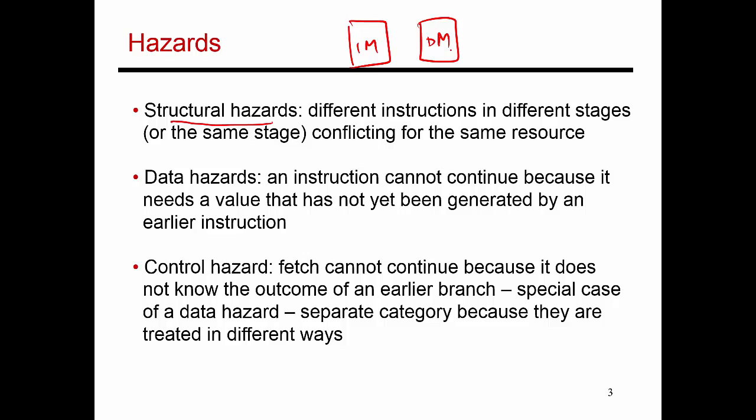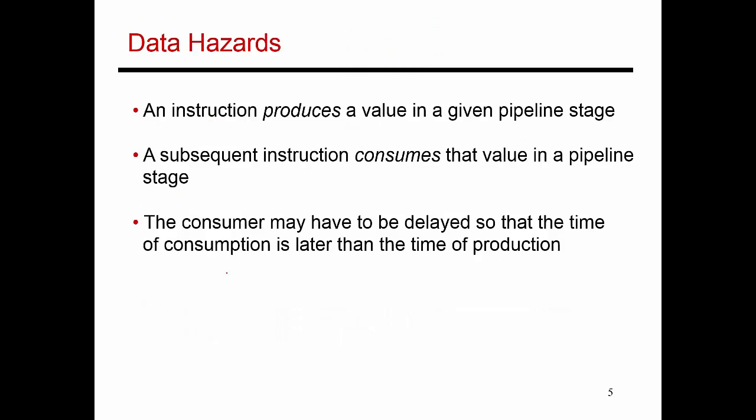Having multiple read ports and separate write ports is another way of dealing with a potential structural conflict. The next problem is a data hazard: if one instruction depends on the previous instruction, they must be separated enough in time. The third problem is a control hazard, where you need to fetch an instruction but aren't yet sure which way execution is going. Data hazards are much harder to deal with and will be examined in more detail.